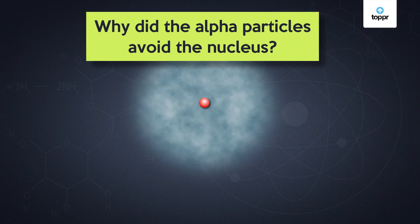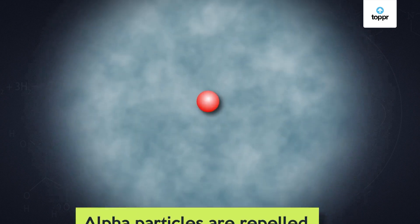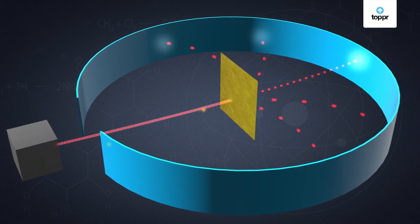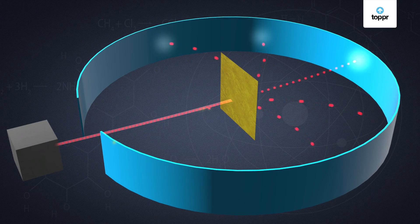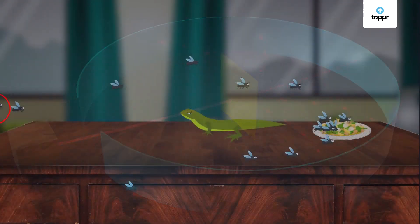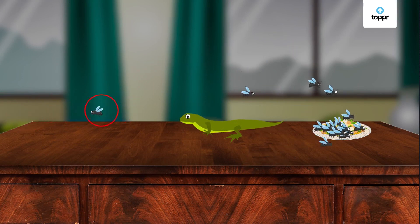But why did the alpha particles avoid the nucleus? Well, it's because they were repelled by it. This means that the nucleus is positively charged, just like the alpha particles. This also leads us to understand why some alpha particles rebound by 180 degrees — they are repelled to the maximum extent when they head directly towards the nucleus. That's what happens to the flies too; otherwise they would end up directly in the lizard's mouth.